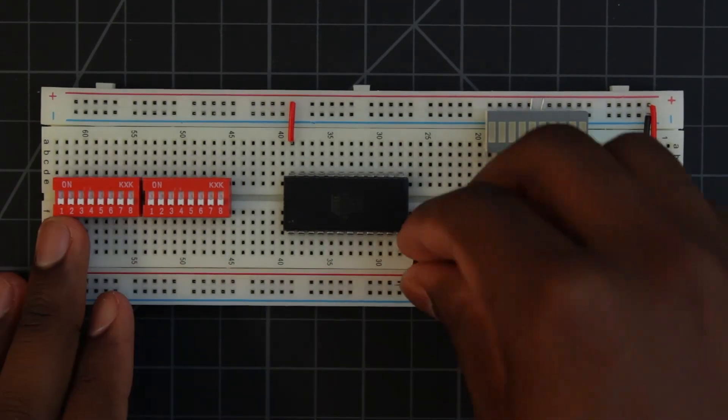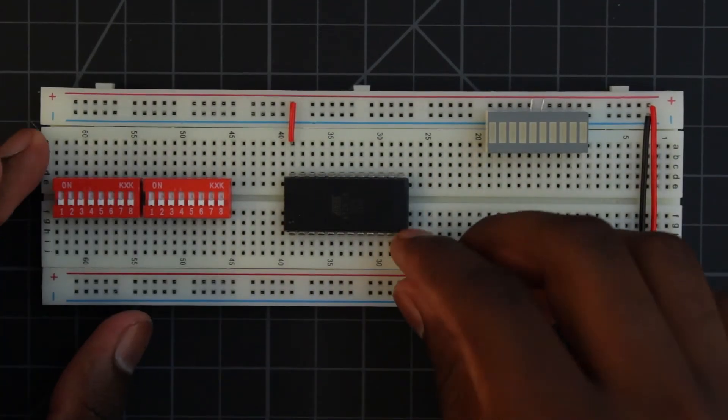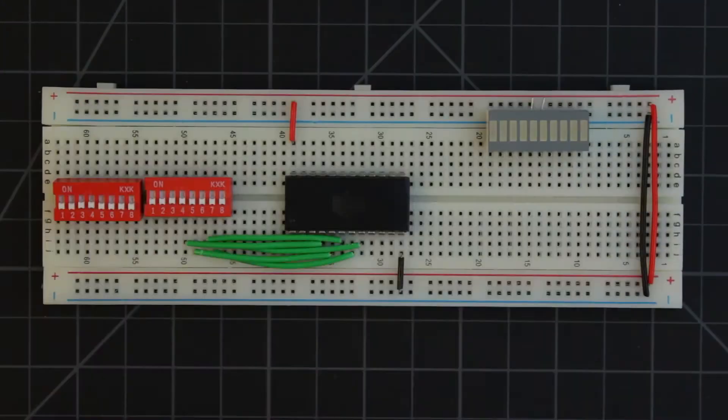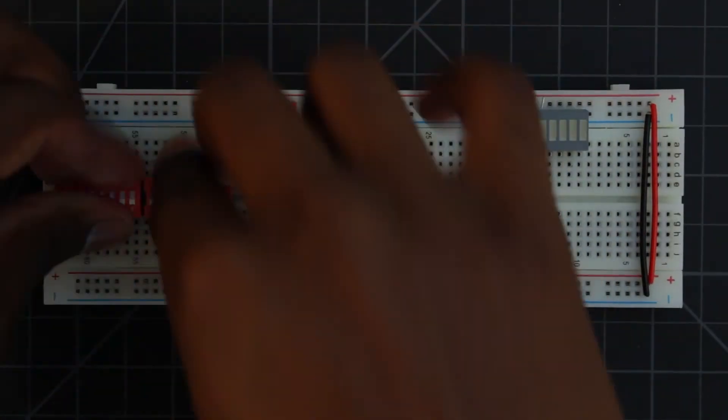For starters, let's put power and ground. So we'll start at address 0, which is in the middle of the chip, and work our way up to address 7, which is the first pin. It's a little bit tight, but I think everything is okay.